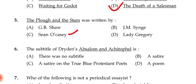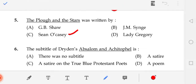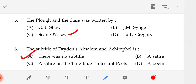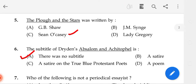The subtitle of Dryden's Absalom and Achitophel — the correct answer is A. Actually, there is no subtitle.